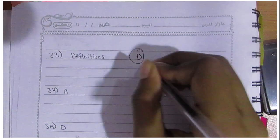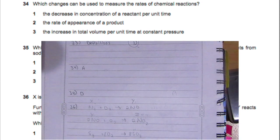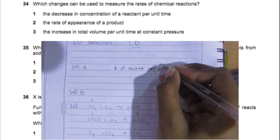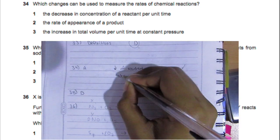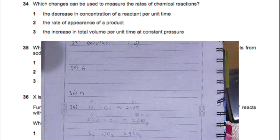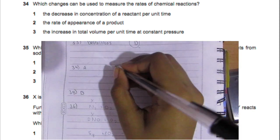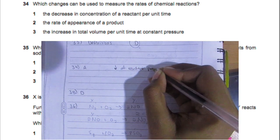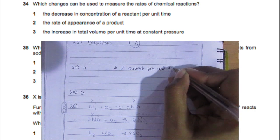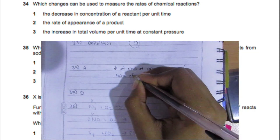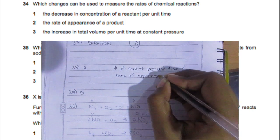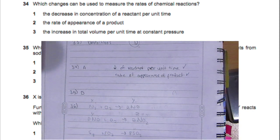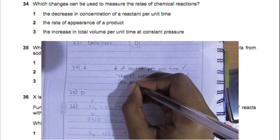Question 34 is an IGCSE question, quite simple. Which changes can be used to measure the rates of chemical reactions? The decrease in concentration of a reactant per unit time is true. The rate of appearance of product is true. The increase in total volume per unit time at constant pressure is true if you have a gas as a product. All three options are correct, so A is your answer.